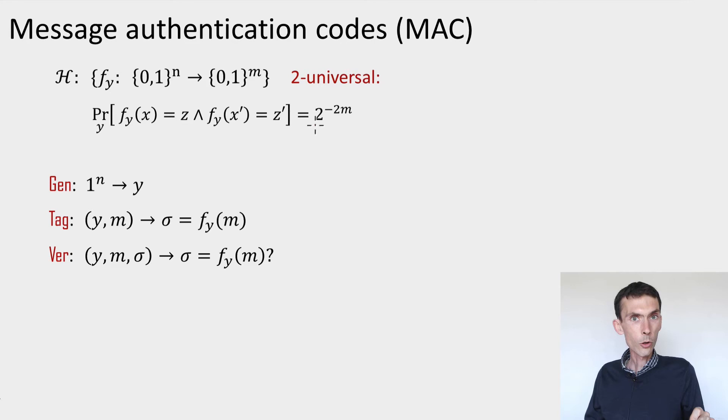In fact, it's possible to construct MACs using a primitive that we've already seen, which are two universal families of hash functions. So I gave the definition for you here again. The family of hash functions from n bits to n bits is two universal if the probability over the choice of a random hash function that the hash function maps two different inputs, x and x prime, to certain arbitrary strings z and z prime, is the same probability as you would get 2 to the minus 2n simply by choosing uniformly random outputs for the values of this hash function on x and x prime.